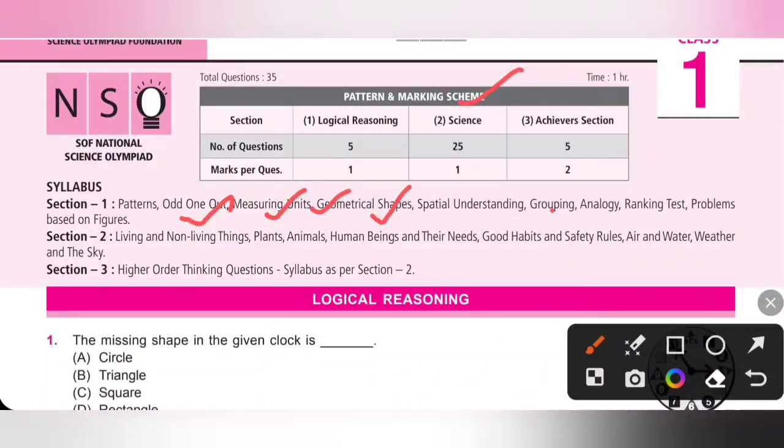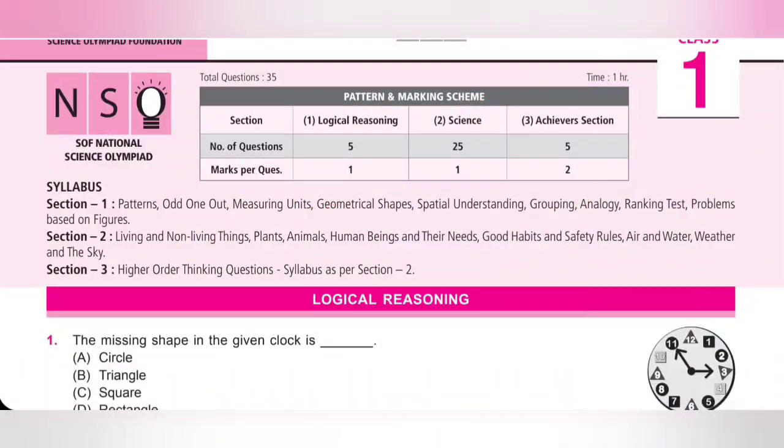Plants, Animals, Human Beings and Their Needs, Good Habits and Safety Rules, Air and Water, Weather and the Sky. Here total number of questions is 25, and each question carries 1 mark.